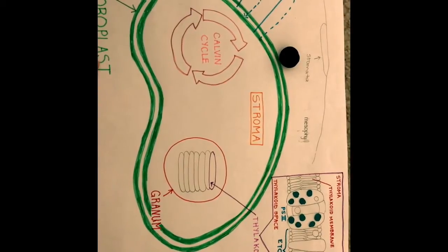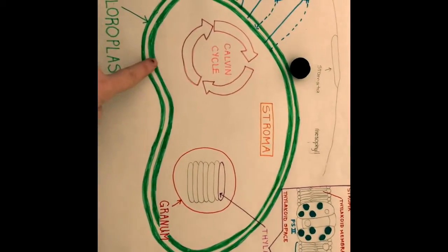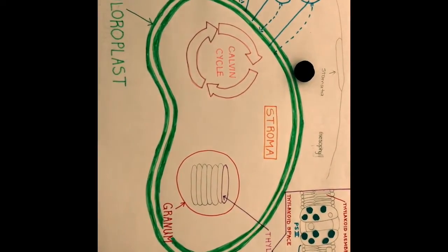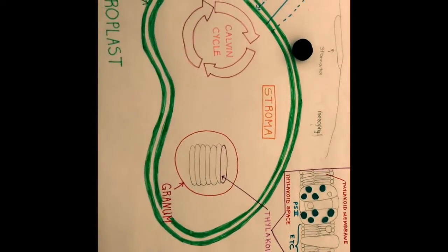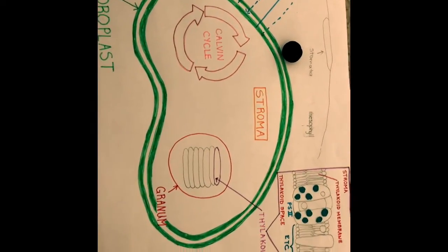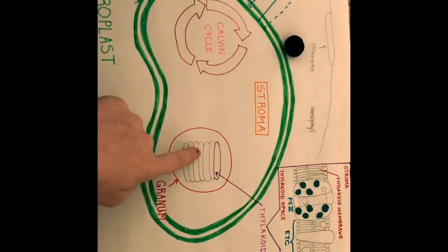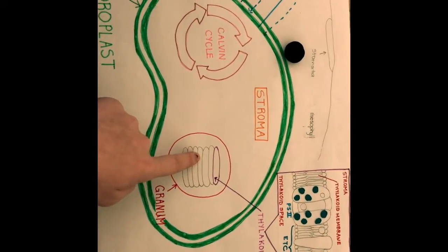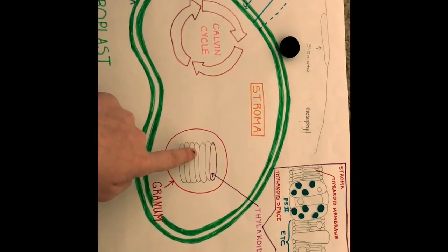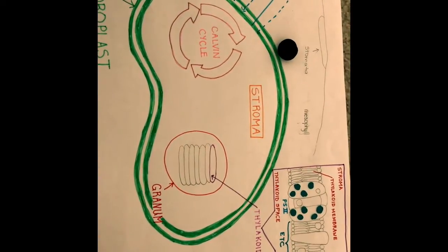The chloroplast has an envelope of two membranes, the inner and the outer. These membranes surround a dense fluid called the stroma, in which a third inner membrane is suspended. This membrane system is made up of sacs called thylakoids, which is where chlorophyll, the material that gives plants their green pigmentation, is located.